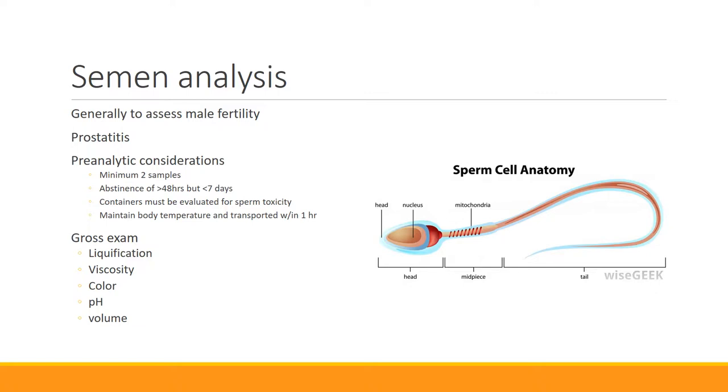When we look at the specimen, there's a few pre-analytical considerations. First of all, a single specimen, outside of assessing for prostatitis, is really not the best way to assess male fertility. Some labs will require that they want two specimens. You also have to instruct the patient on how to collect this. One of the big things is a certain level of abstinence from sexual activity so that the sperm count isn't depleted when we're trying to assess fertility. You want abstinence of 48 hours but not more than seven days. There is no saving it up, so there's that window of two days abstinence up to seven but not more than seven.